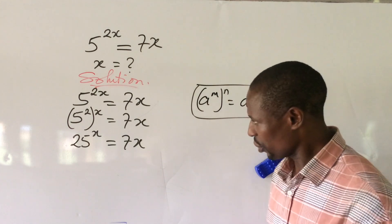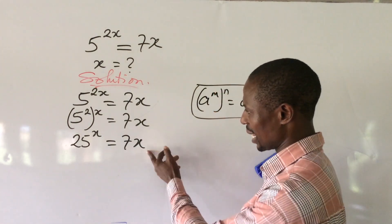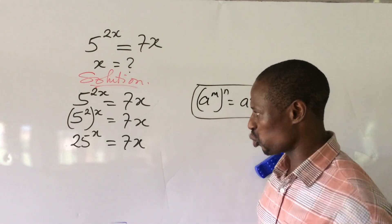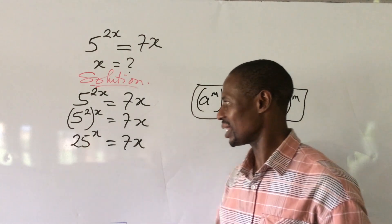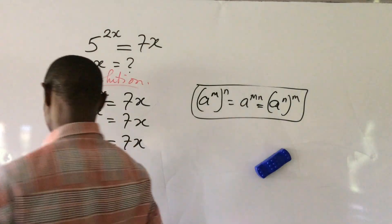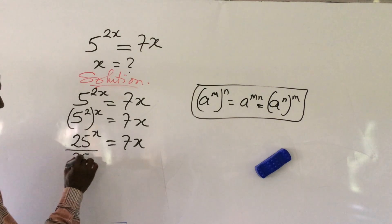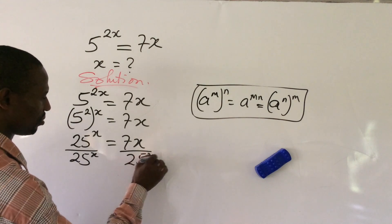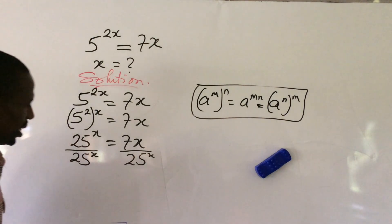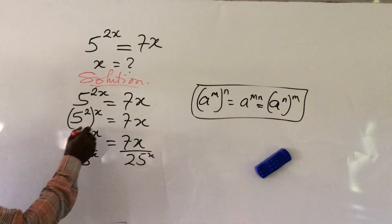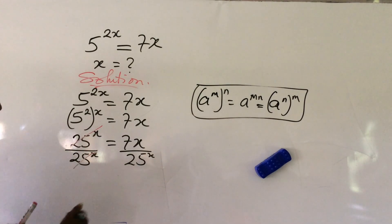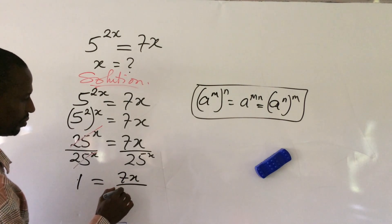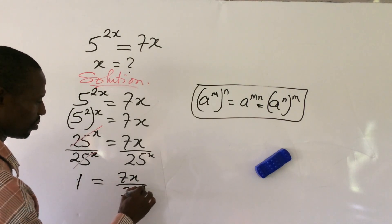Now, we're having x at the exponent and at the base here. What we'll do is divide both sides by 25 to the power of x to make the left-hand side unity. Dividing both sides by 25 to the power of x, the left-hand side gives us 1. So we now have: 1 equals 7x all over 25 to the power of x.